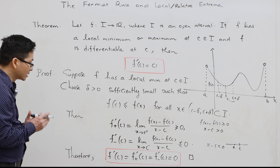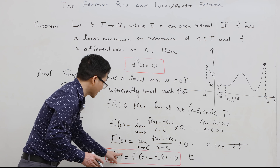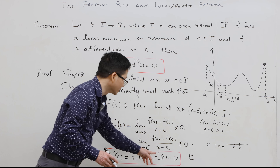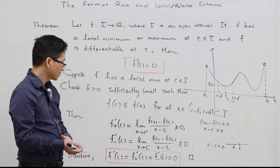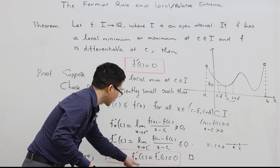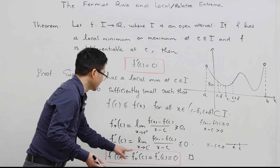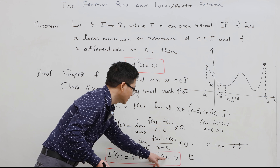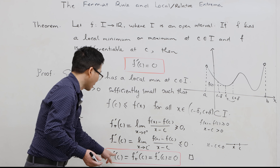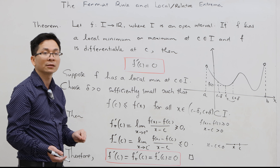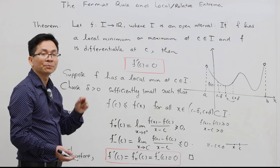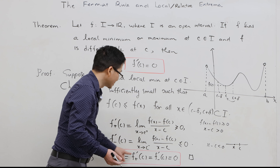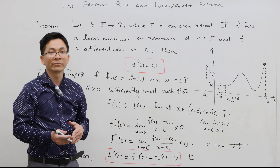As mentioned earlier, the derivative f'(c) equals both the right derivative and the left derivative at c. The right derivative is ≥ 0, so f'(c) ≥ 0. The left derivative is ≤ 0, so f'(c) ≤ 0. Therefore f'(c) is both greater than or equal to 0 and less than or equal to 0, which means f'(c) = 0. The proof is complete.